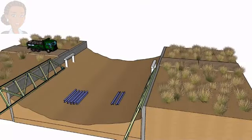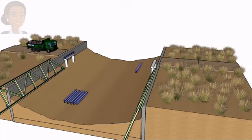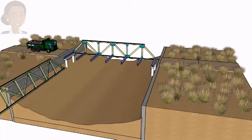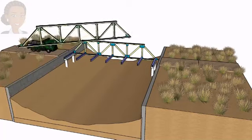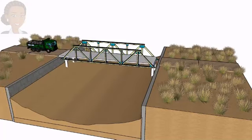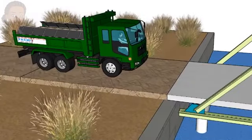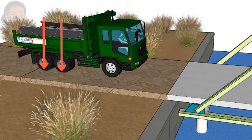Suppose we want to build a truss bridge that provides a passage for vehicles across a canal. The structure is going to be constructed in such a way that the vehicle load transfers to the two side trusses via a series of beams supporting the bridge deck. The bridge is expected to support the maximum load of a truck having three axles, which can be viewed as a series of concentrated loads spaced according to the distance between the axles.